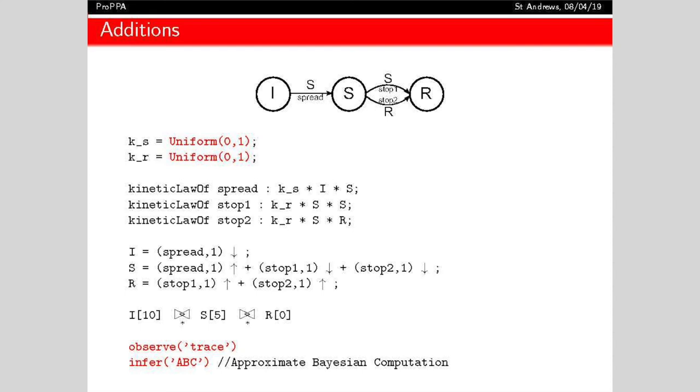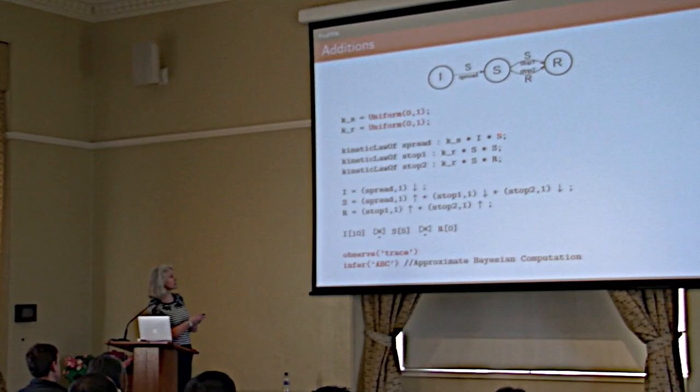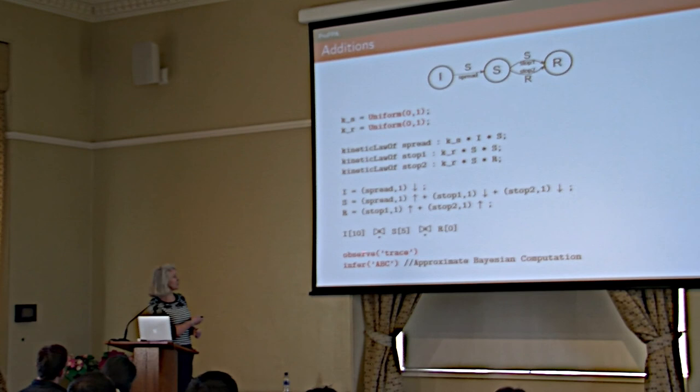Going back to our rumor spreading example: we may want to admit we don't know the rates Ks and Kr. Instead, we say we believe there's something between zero and one — we choose a uniform distribution. We bring in some observations using a new syntax: observe, and in this case using trace, which is just a CSV file of output values for species at certain time points. We tell the model at certain time points how many innocents, spreaders, and repressors we have — typically at a small number of time points, ten in our experiments. Then we specify which inference approach to use. The model itself: the behavioral part is the same as BioPEPA, just with the prior distribution added at the bottom along with our observations and inference.